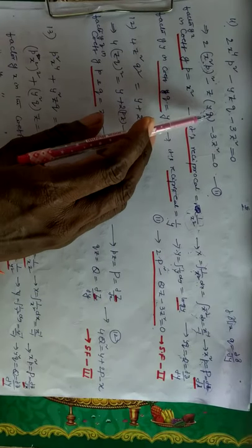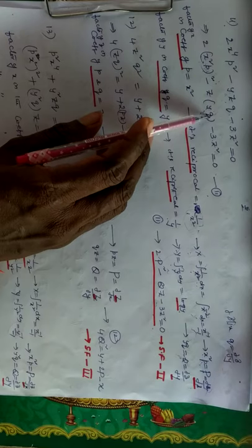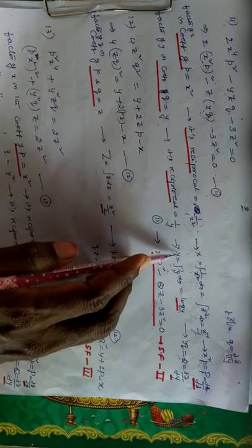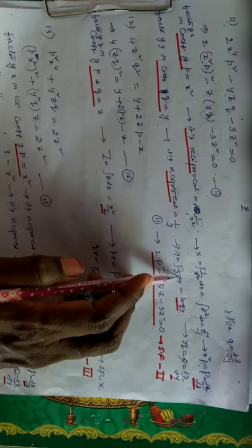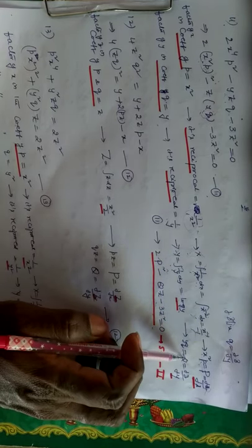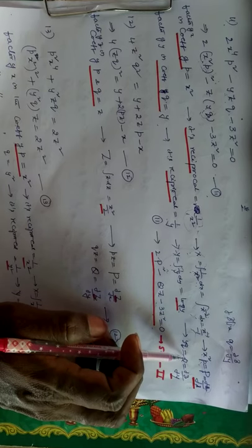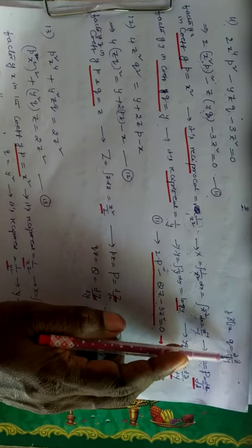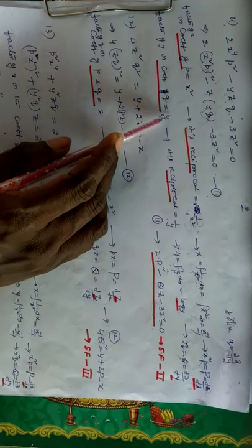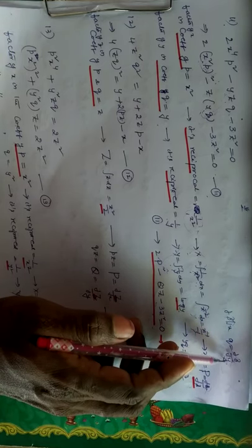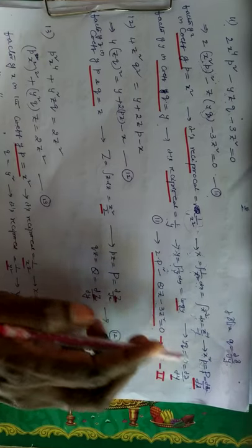Now we merge small y into Q. For this, we take capital Y. Here the coefficient of q is y, and its reciprocal is 1/y. Capital Y equals the integral of the reciprocal, that means the integral of (1/y)dy = log y. By considering capital Y = log y, then y · small q = capital Q, where capital Q is nothing but ∂z/∂Y. In standard form Q there is small z and small y; in this problem we replace small y with capital Y.